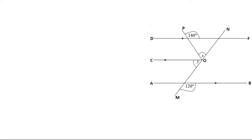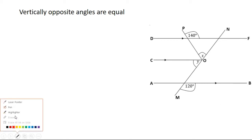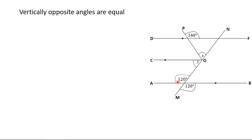Looking at this diagram carefully, we know that vertically opposite angles are equal. This angle here is 120 degrees, so this angle here is also 120 degrees, since these two angles are vertically opposite angles.